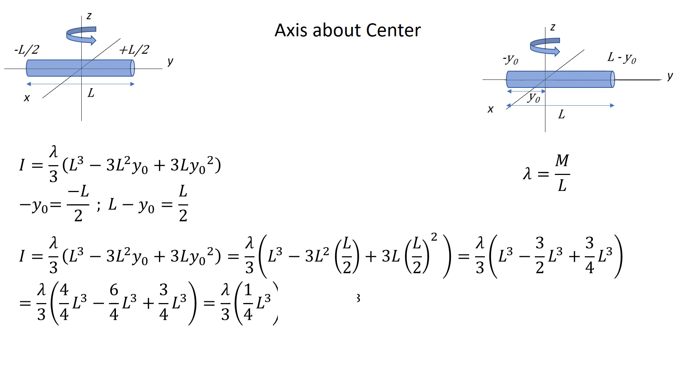As done before, I'll be changing our linear mass density back into a mass over length form and cancelling out a power of L. We are left with the moment of inertia of a rod rotating an axis through its center, and that is 1 twelfth times mL squared.